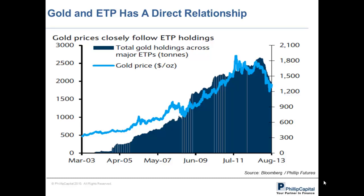Another important variable which affects gold prices is gold Exchange Traded Products holdings, or ETP holdings. ETP constitutes investment demand, which is the second largest component of world gold demand. Exchange traded products are relatively priced where the value is derived from gold. ETP consists of ETFs and ETNs. This chart clearly indicates the close relationship between gold price and ETP holdings. As mentioned earlier, sharp reduction in gold ETP holdings aggravated the fall in gold price. These holdings are indicative of investors' sentiment towards gold.